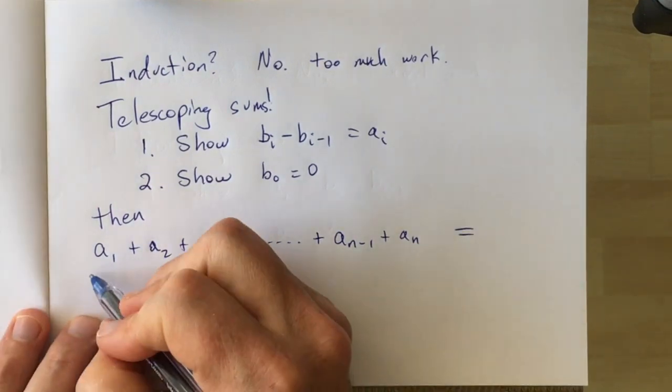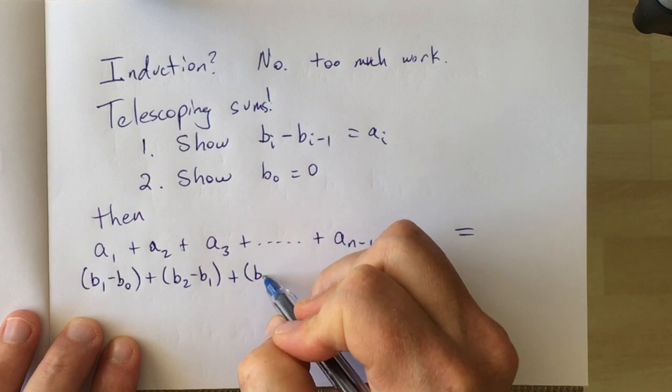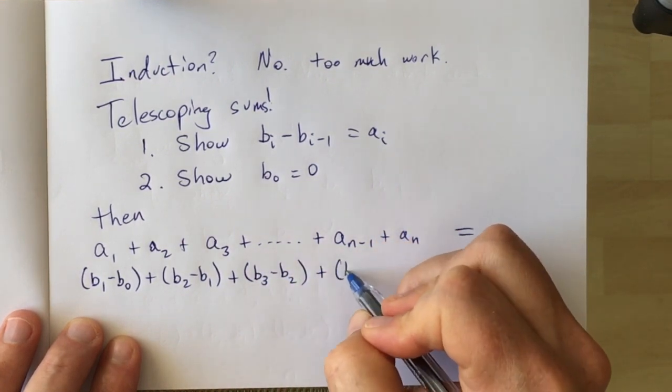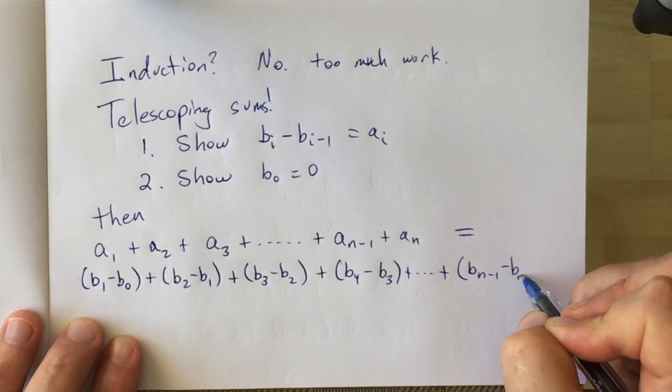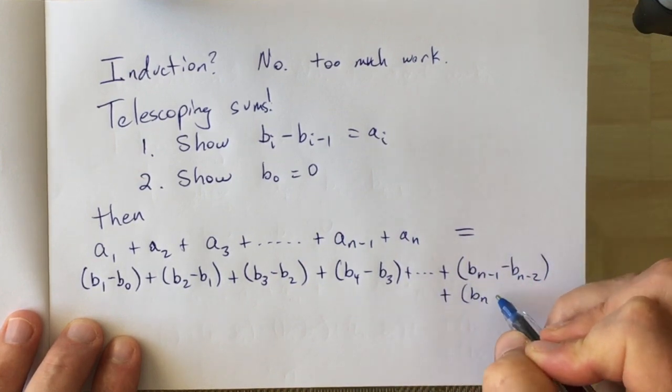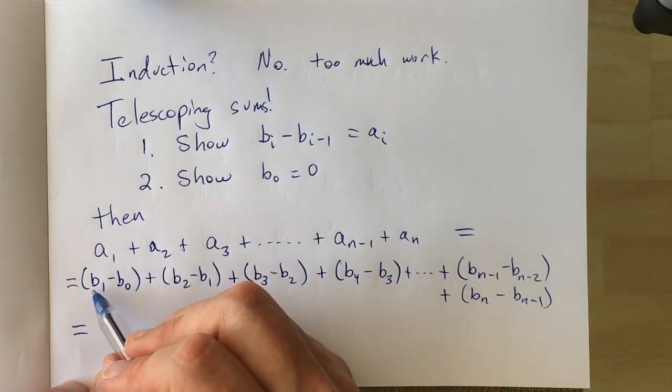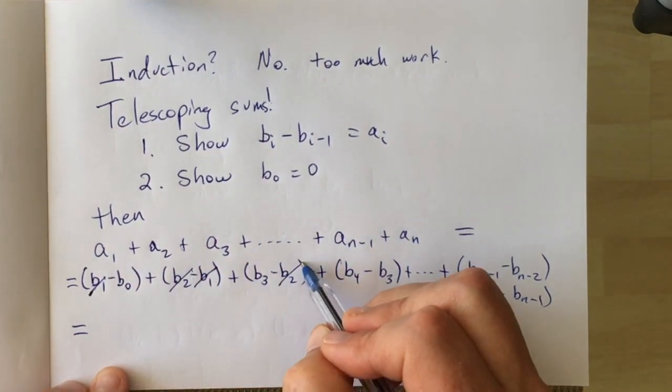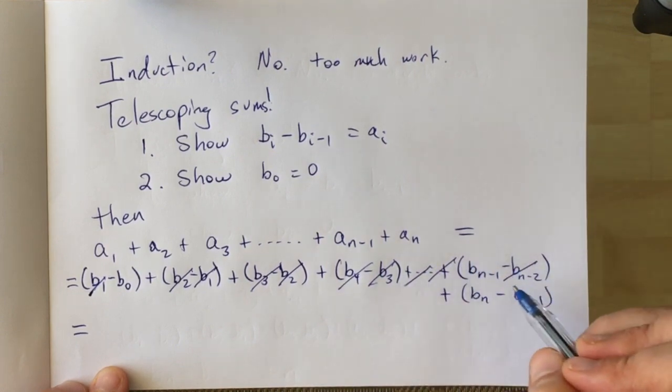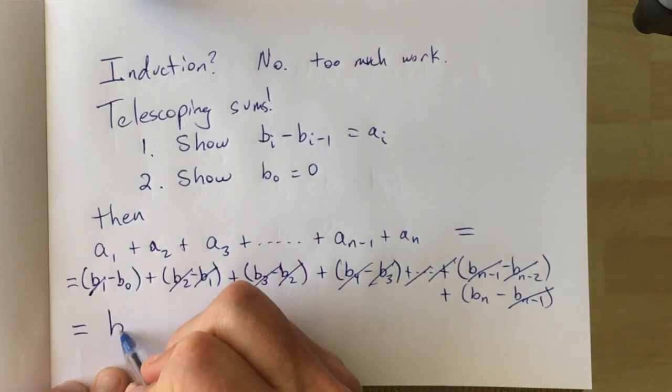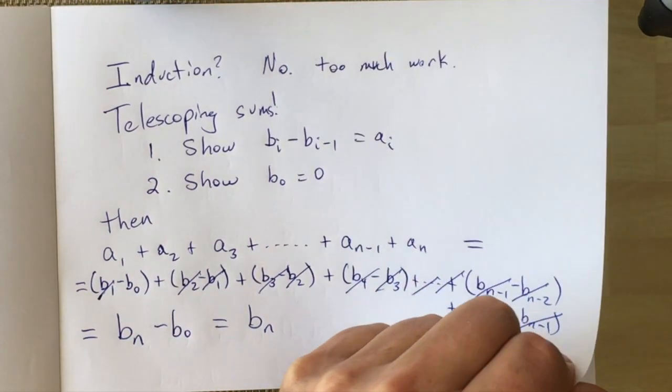So now if we look at the sums a1 plus a2 plus a3 up to an, and we replace ai with bi minus bi minus 1, and we write down all of these terms, then we look and we can see that they cancel one by one. b1s cancel, b2s cancel, b3 cancel, b4 cancel, bn minus 1, bn minus 2, and the only things that are left are bn and b0.